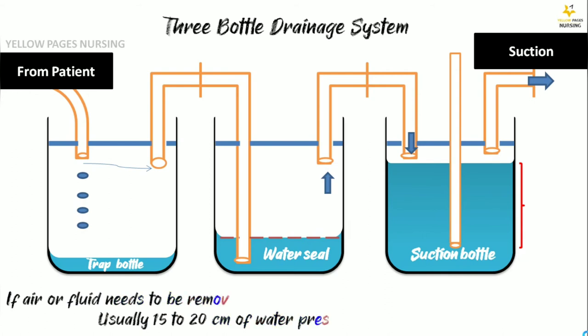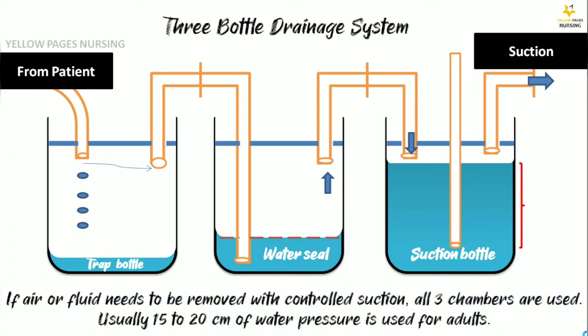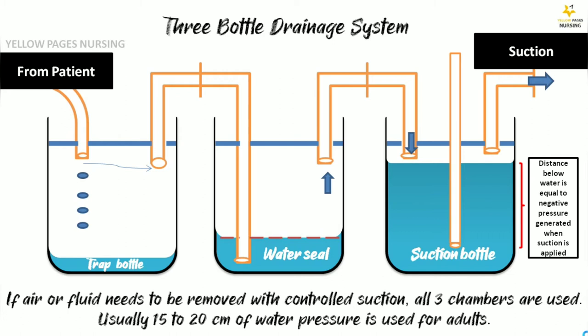In the three-bottle drainage system, when air or fluid needs to be removed with controlled suction, all three chambers are used. Usually 15 to 20 centimeters of water pressure is applied for adults. One container is the trap bottle, one is the water seal, and the third is the suction bottle. This system is used when gravity alone is not sufficient or respiration is too weak.